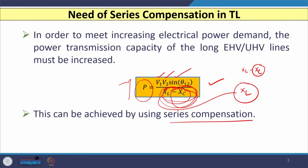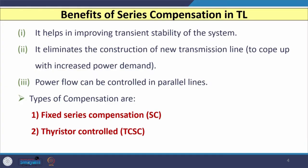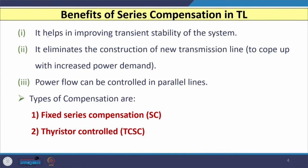If we incorporate a series capacitor in the transmission line, there are several benefits. The first benefit is that incorporating a series capacitor helps in improving the transient stability of the system. It also eliminates the need for constructing a new line, because as electricity demand increases day by day, instead of erecting a new transmission line, we can improve the power transfer capability of the existing line by installing compensation devices such as a series capacitor.